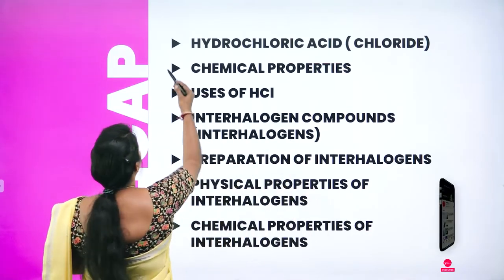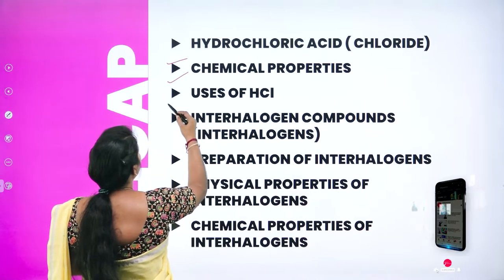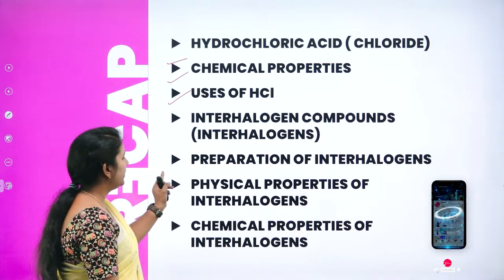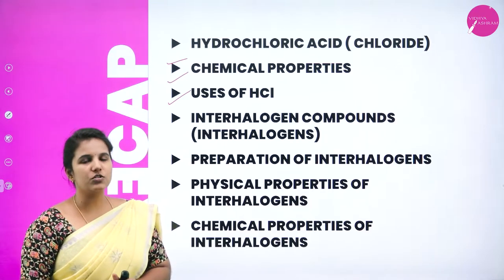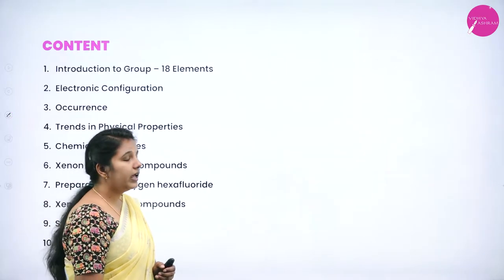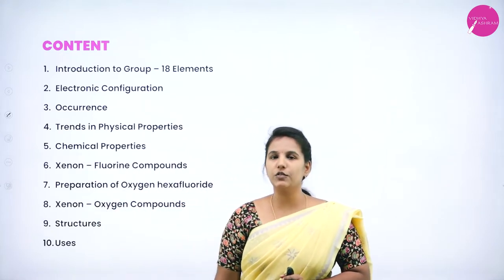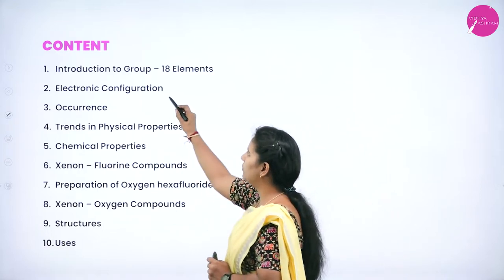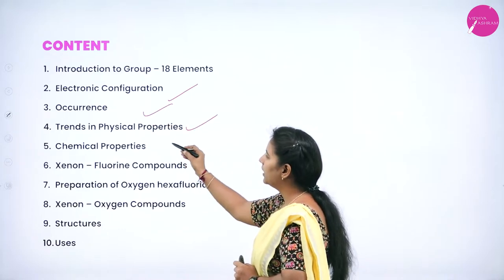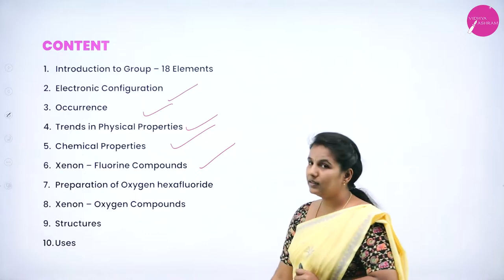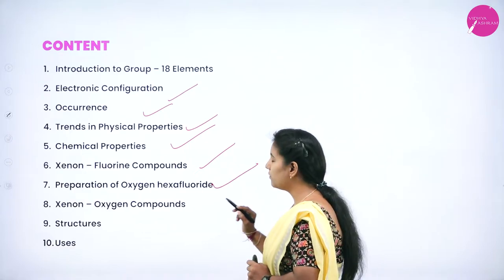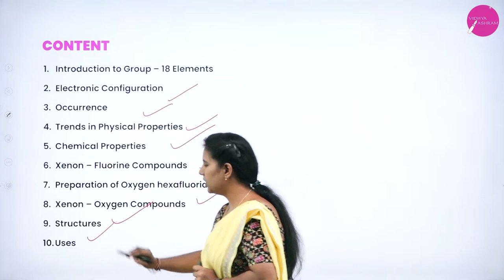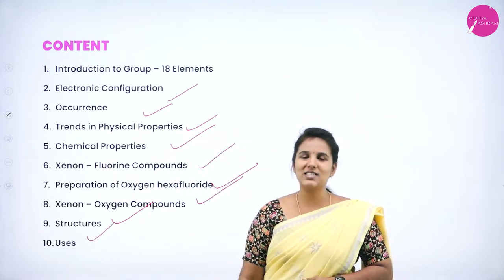We discussed hydrochloric acid, its chemical properties and uses. We also talked about interhalogen compounds — their preparation, physical and chemical properties. Today, we will move on to group 18 elements in the periodic table: their electronic configuration, occurrence, trends in physical properties, chemical properties, and mainly xenon fluorine compounds, preparation of xenon hexafluoride, xenon oxygen compounds, their structures, and uses.